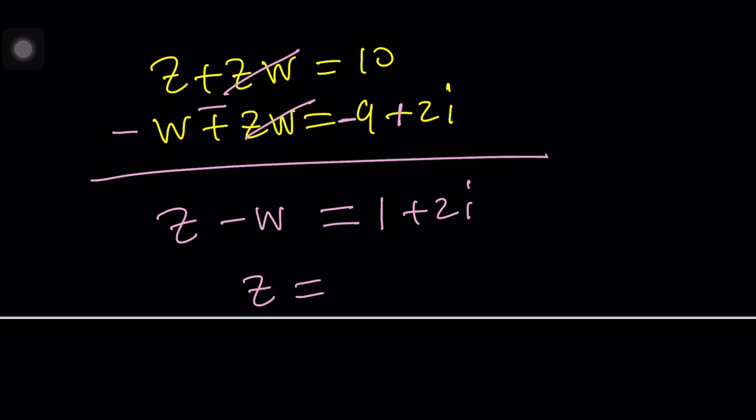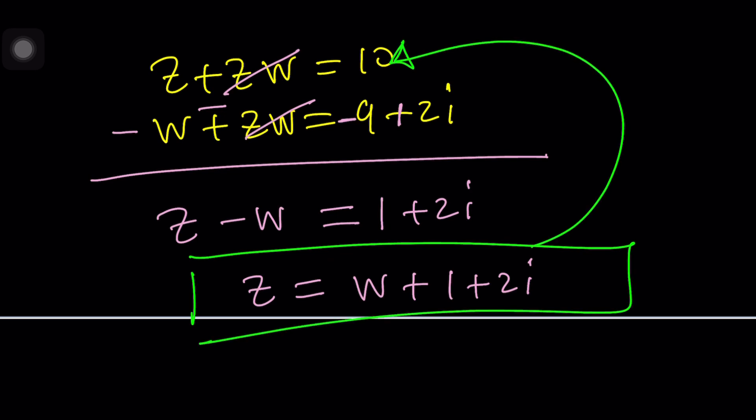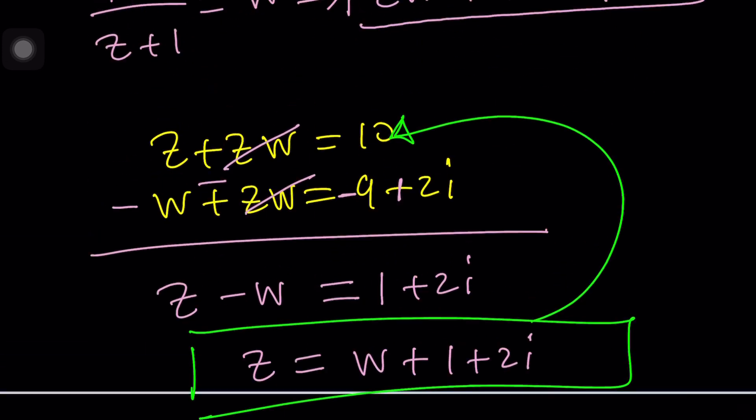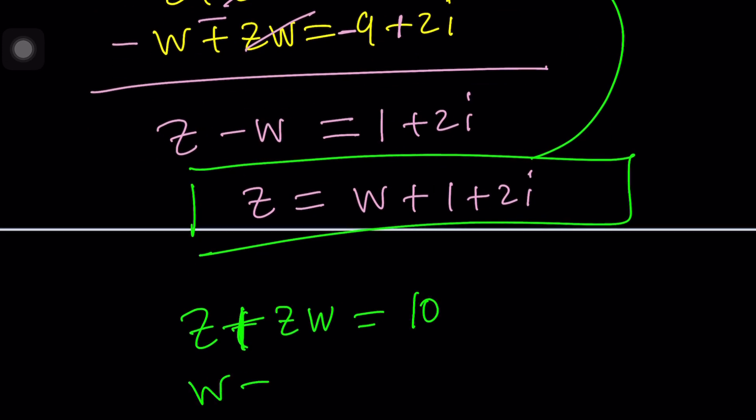We can do the following. We can isolate z and write it as w plus 1 plus 2i. And then we can substitute into one of these equations, like the top one. The top one looks a little friendlier, right? And that's going to give us a quadratic equation we can solve. But since we're looking for z, doesn't it make sense to isolate w maybe? Yes. But here's another way to approach it.